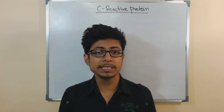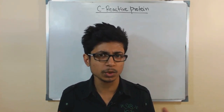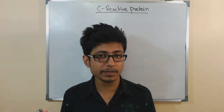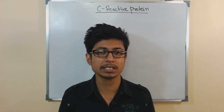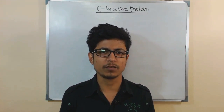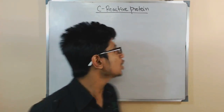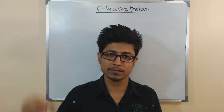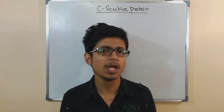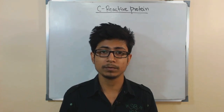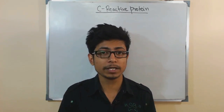Welcome back. In this video we will be talking about C-Reactive Proteins, or CRP. You've probably heard this name in your medical reports. CRP is definitely something related to infections and inflammation in your body. C-Reactive Protein is a protein found in our blood, present in very tiny amounts all the time. The CRP content goes up when any infection occurs in your body.